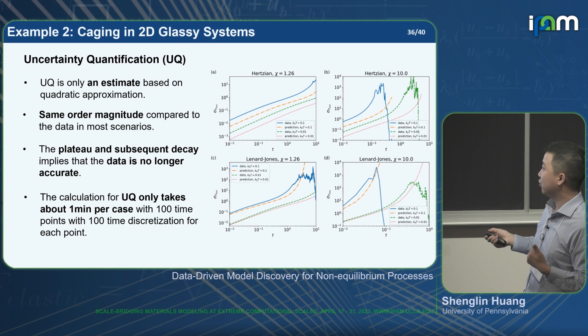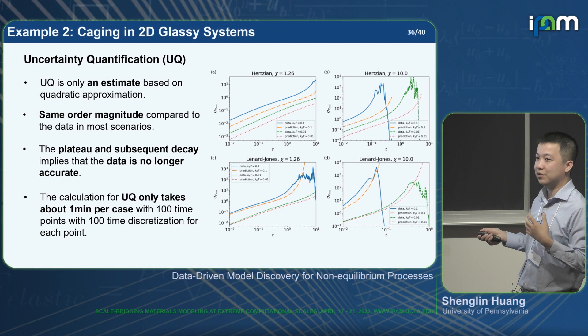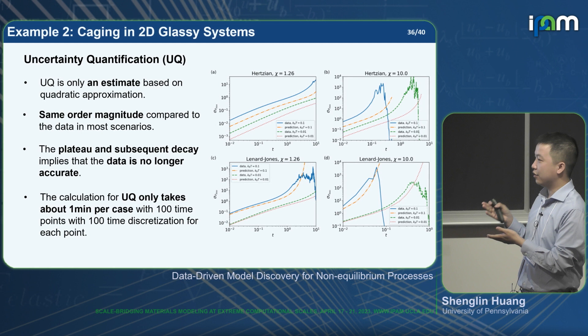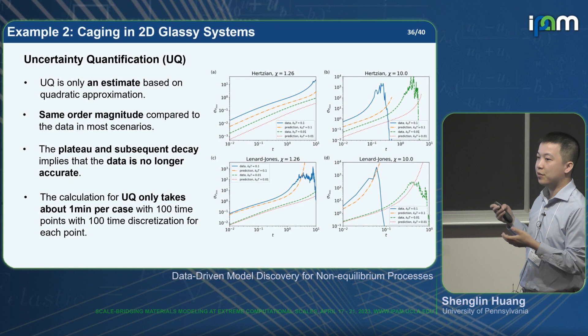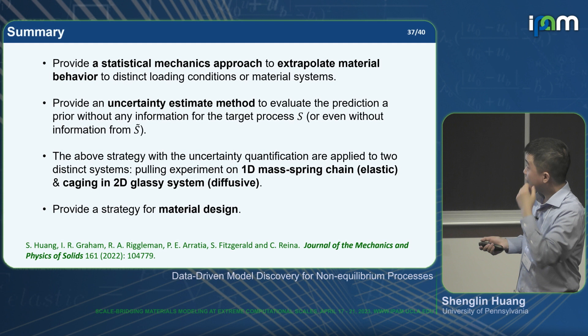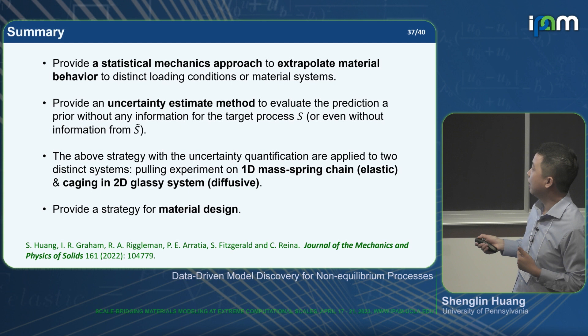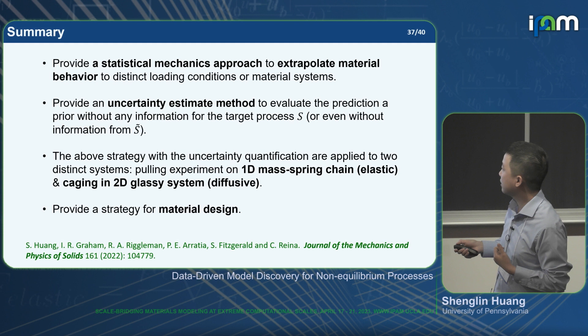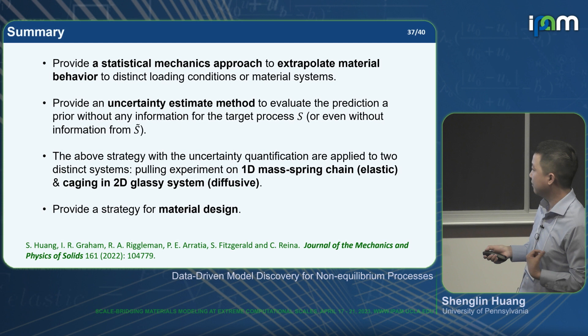Notably, the uncertainty estimate calculation only takes one minute per line. We can even perform UQ before running any target system simulation — using it to determine how many realizations are needed to reach a desired uncertainty level — and then run the simulation for the simulated system and predict the target system. In summary, we provide a statistical mechanics approach to extrapolate material behavior to different systems and different loading conditions, provide a reliable uncertainty estimate method not previously available for hyperdynamics, and it can be applied to distinct systems like elastic and diffusion systems to provide strategies for future material design.